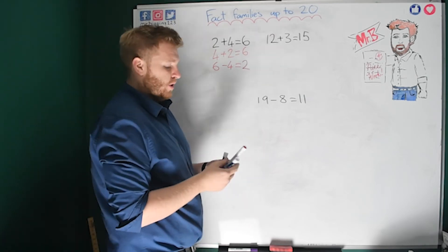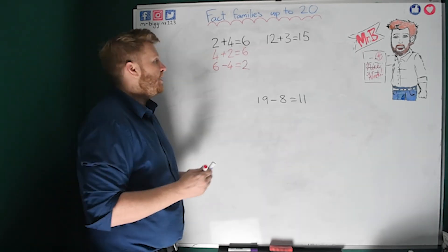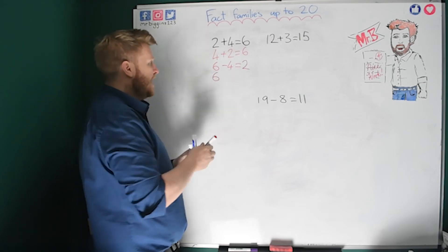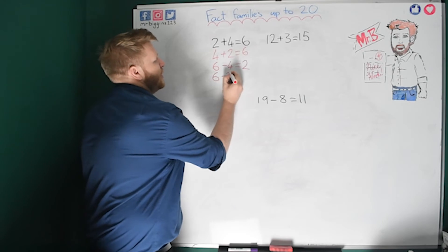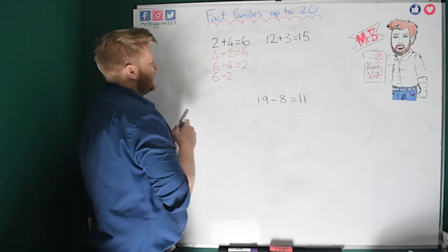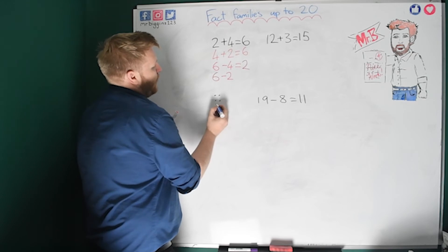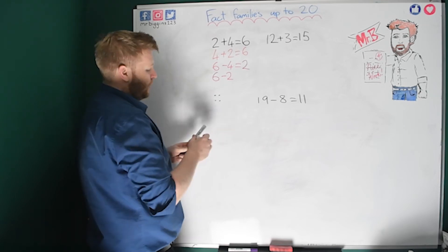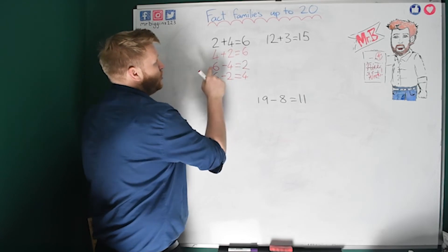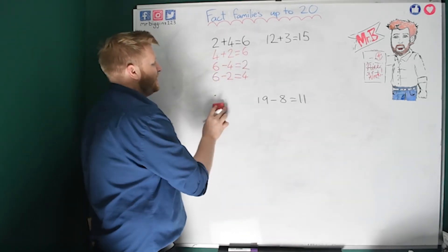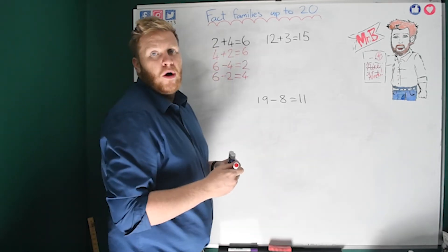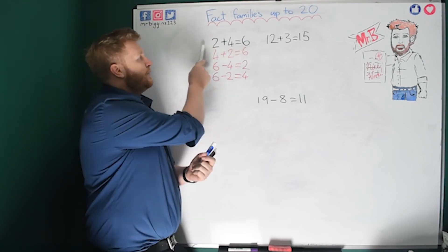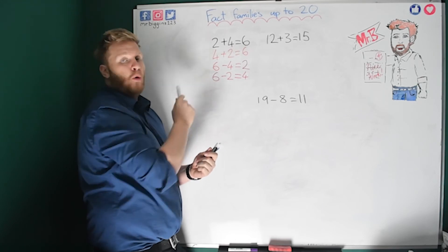I can do one more subtraction in the fact family. With subtraction, the biggest number goes first — so we've got 6 again. I've already taken away 4, so this time I'm going to take away 2. Wiping off 2 dots, I've got 4 left. A lot of you will have already known that, because I said the numbers will all be the same. So from 2 plus 4 I now know all of these sums without working them out.